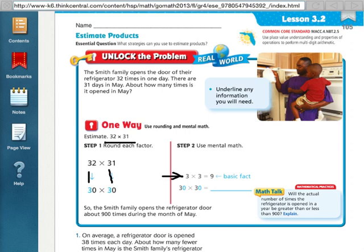They say here you can use your basic fact of 3 times 3 which equals 9 and then just add your two zeros. So 900 would be our estimate for 32 times 31. Easy enough, right?